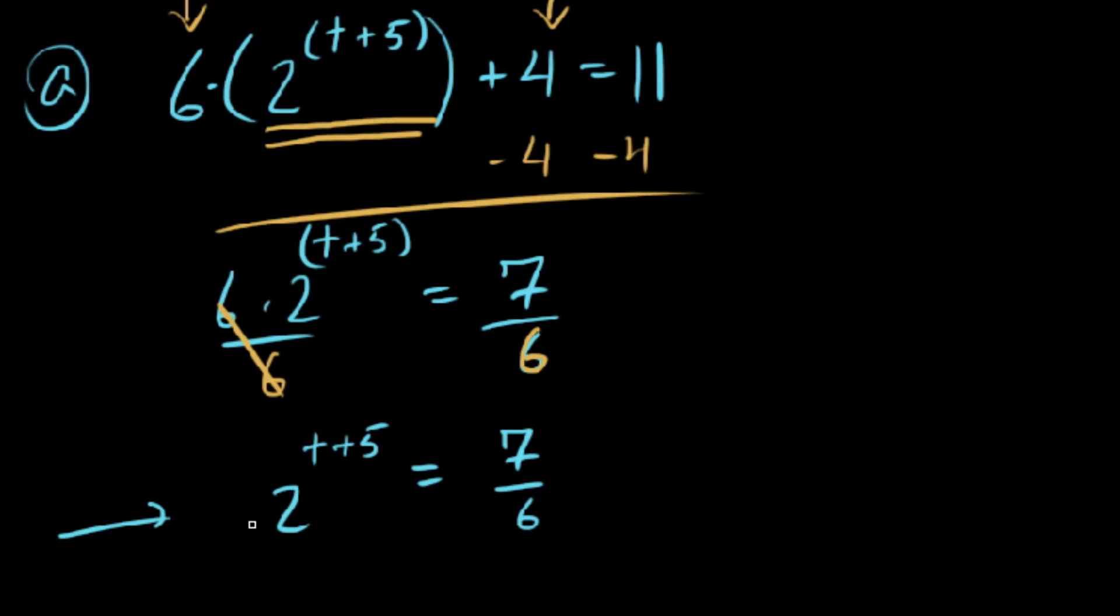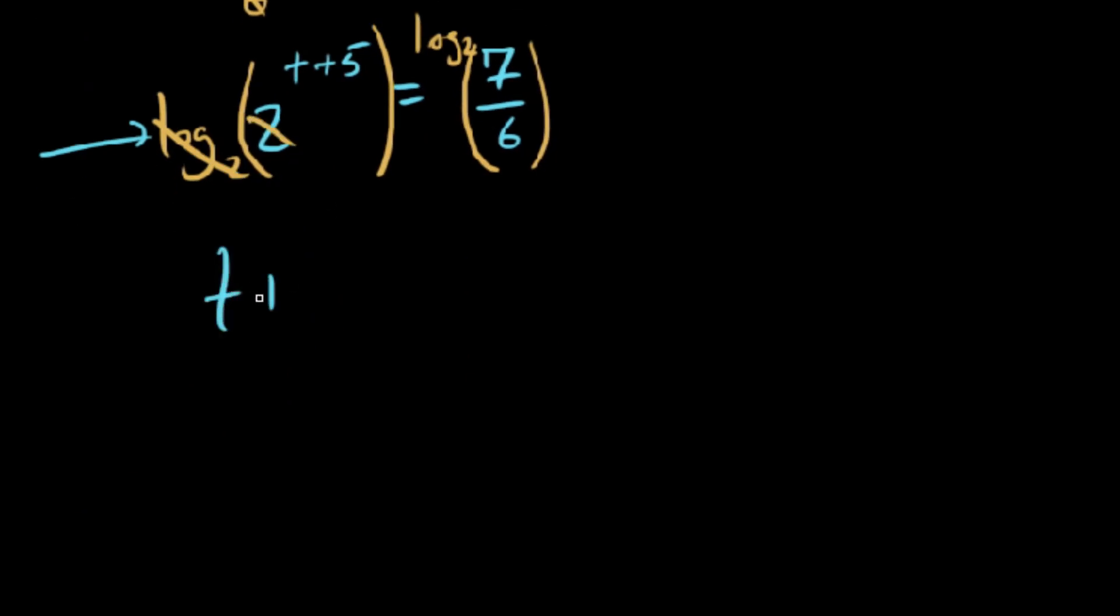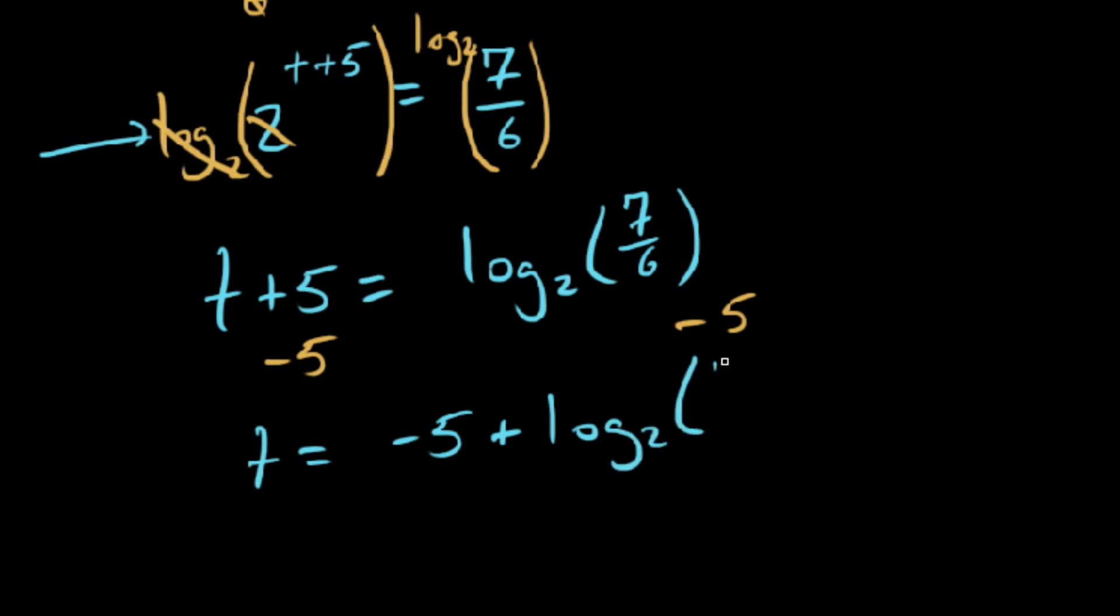So now that we've got this exponential thing isolated, what we can do is we can undo it using its inverse, which the inverse of an exponential thing is a logarithmic thing. So we'll take the log base 2 of everything on the left. And the reason why we're choosing a base of 2 is because log base 2 of 2 to the power of something, that exponential and that log base 2 are going to cancel each other out. So we have t plus 5 equals log base 2 of 7 sixths. So one more step in order to isolate our t here is to subtract 5 from both sides, and we end up with t equal to negative 5 plus log base 2 of 7 divided by 6.